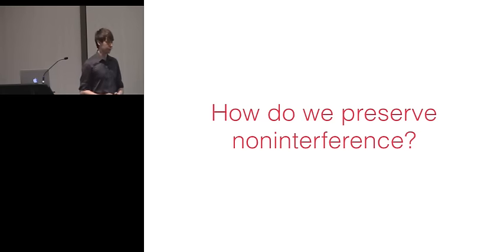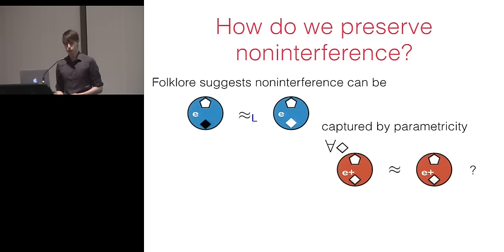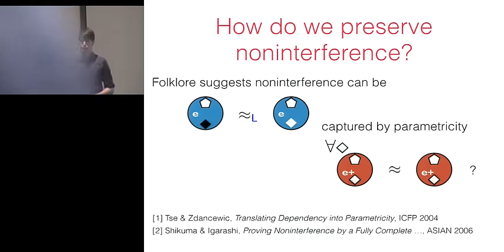So how do we write a compiler that preserves non-interference? Well, folklore suggests that non-interference can be captured by parametricity. The intuition for this is, both are equivalence properties. If we stare at the theorems of both of them, they look very similar. If we take a look at the proofs, they are both proved using very similar logical relations-style arguments. So can we show that non-interference in a security-type language can be preserved by translating to a language without security types, but with parametric polymorphism? And in fact, in an ICFP 2004 paper, Zdancewic and others give a translation from the core calculus of dependency, which provides a non-interference guarantee, to system F. However, two years later, Shikuma and Igarashi show a counterexample for this, demonstrating that this translation does not preserve non-interference. So this is the line of work. It was the starting point for our paper.